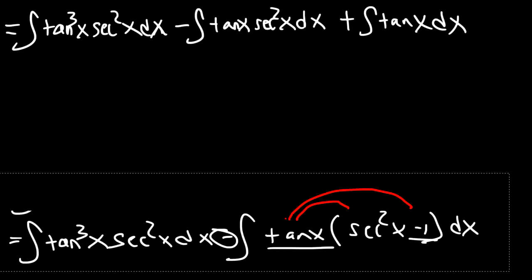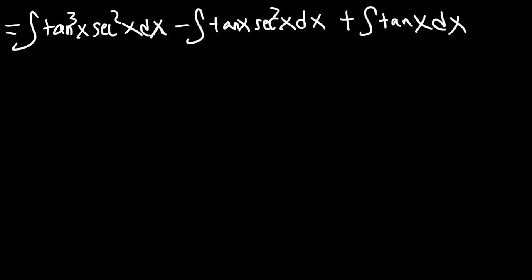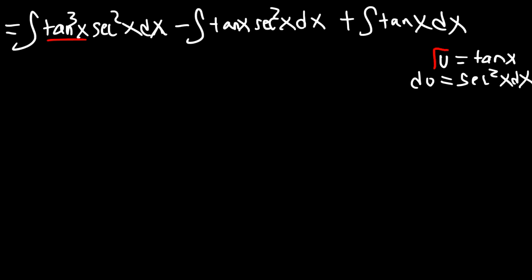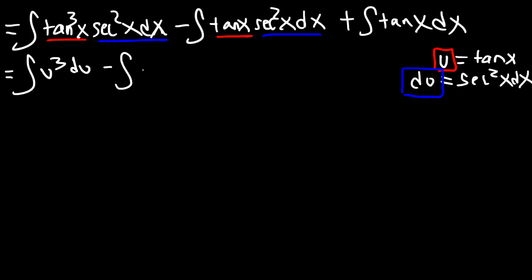Now we're going to use u-substitution for all three of these integrals. For the first two, let u equal tangent x, so du equals secant squared x dx. We can replace tangent with u and replace secant squared dx with du. This lets us integrate both integrals at the same time: the integral of u cubed du minus the integral of u du.